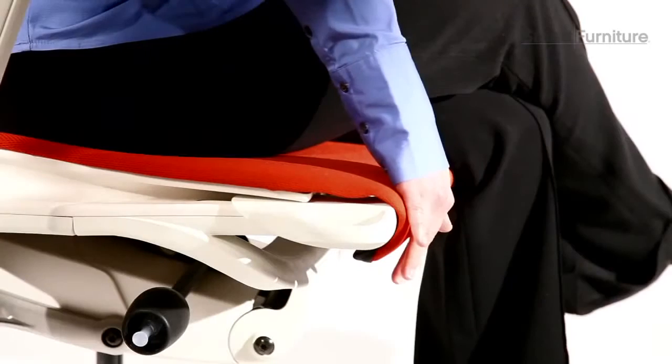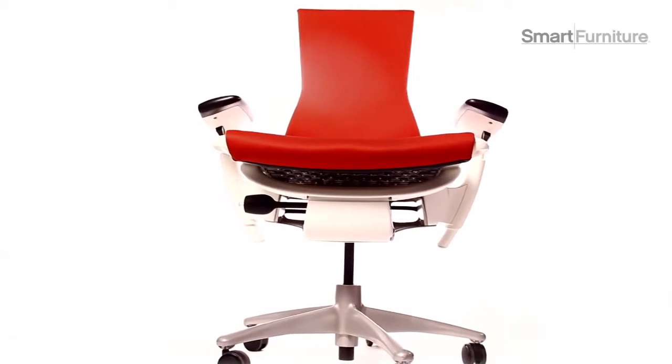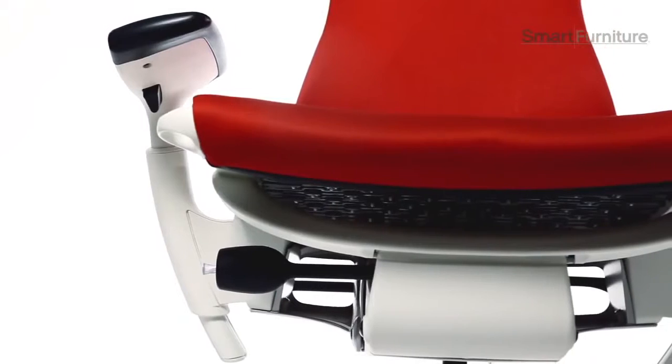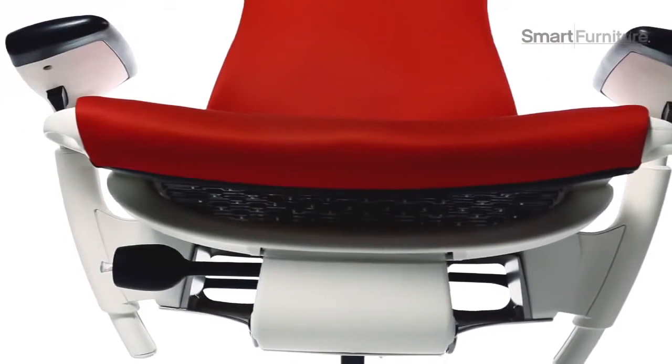First, the seat. The waterfall edge here helps keep pressure off the bottom of your legs. The flexors built into the bottom of the seat improve circulation and keep your legs from aching.